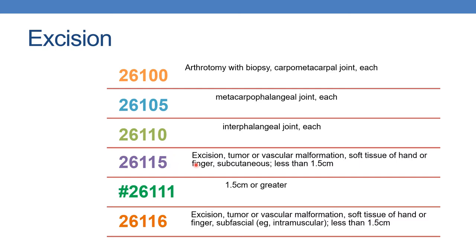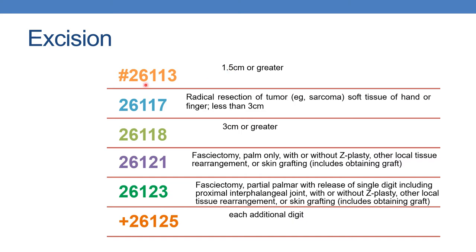Next is 26115: excision, tumor or vascular malformation, soft tissue of hand or finger, subcutaneous, less than 1.5 centimeters. When the tumor size is 1.5 centimeters or greater, you need to assign out-of-numerical-sequence code 26111. The next is 26116: excision, tumor or vascular malformation, soft tissue of hand or finger, subfascial (intramuscular), tumor size less than 1.5 centimeters. And 26113 is reported if the tumor size is 1.5 centimeters or greater.